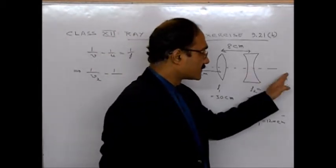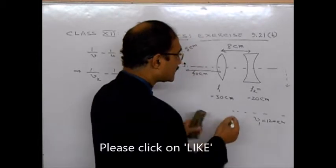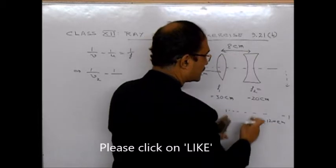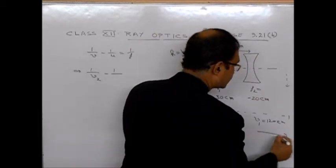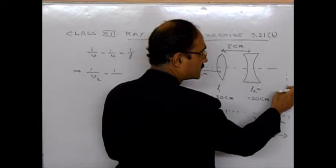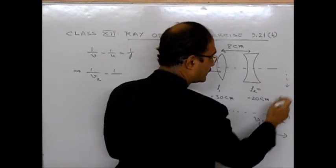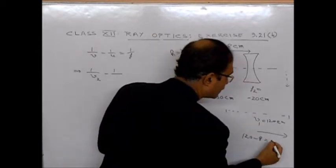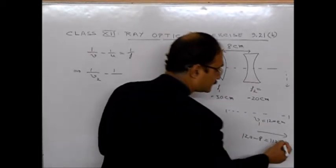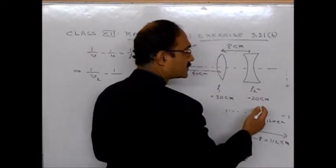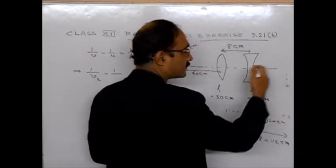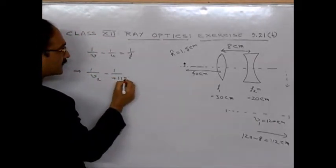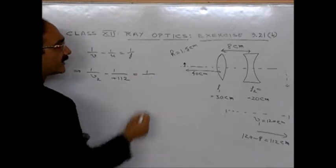Now, the object distance for this will be, see, this V1 is from here to here, and this distance is 8 cm. So this distance of this image from this will be 120 minus 8, that will be 112 cm. Now, this is towards this. So in the positive side, this time U will be plus 112 cm.